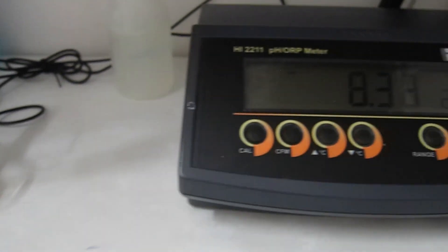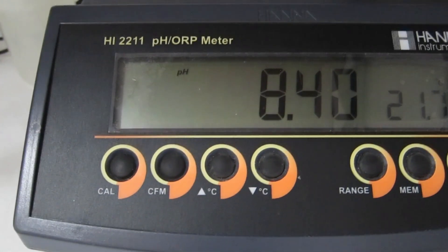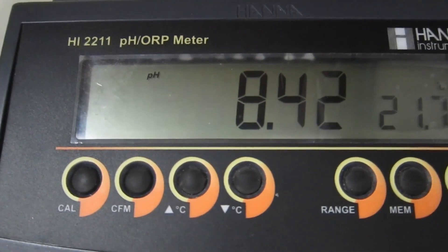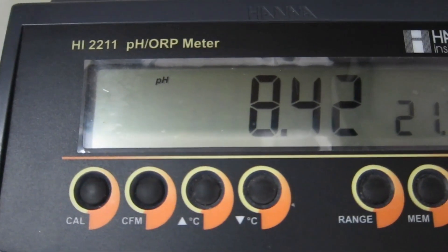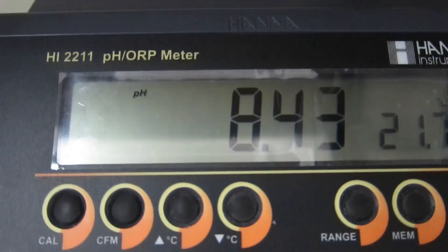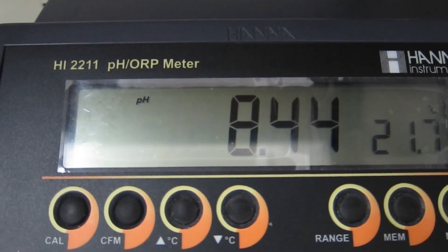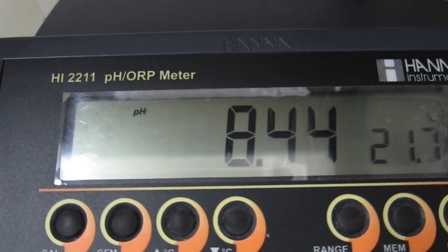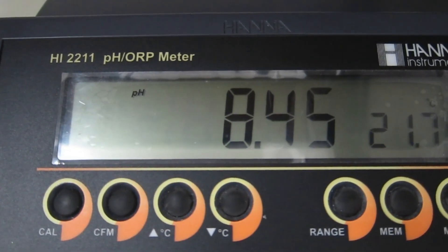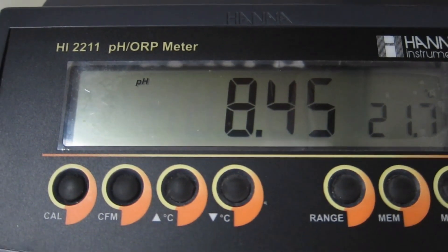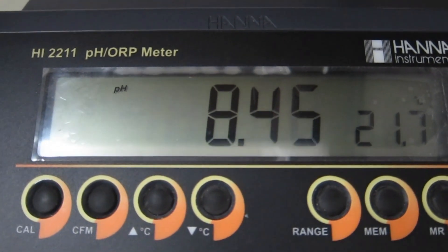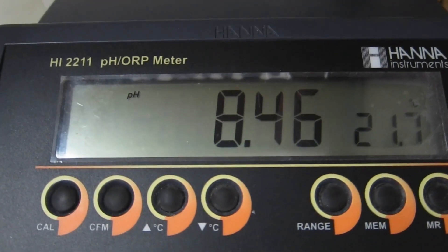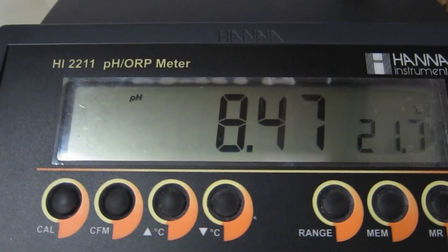The pH is shockingly high—8.40—but all of our ingredients can tolerate this and we know that when we add the preservative system, the pH comes to around 5.40-5.30, so that's quite okay. Don't panic. We can now move on to blending the oil and the water phase.